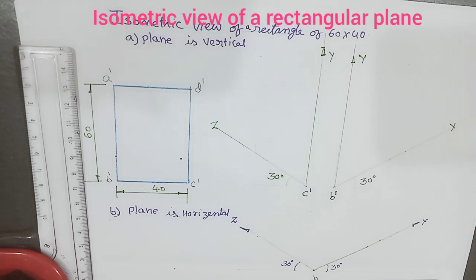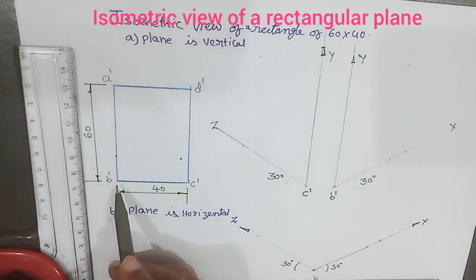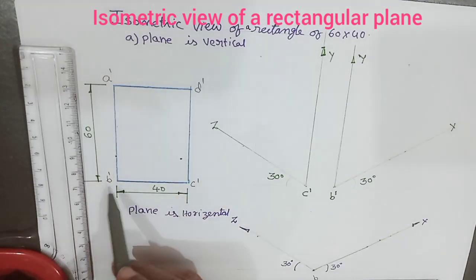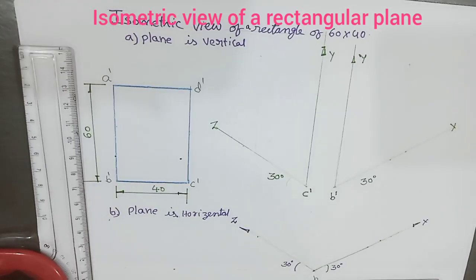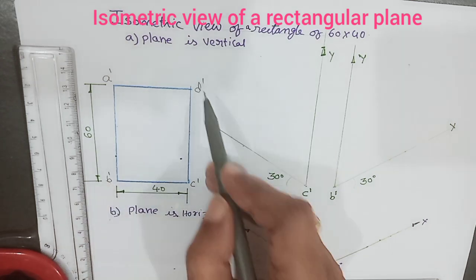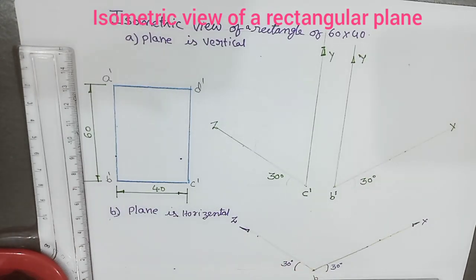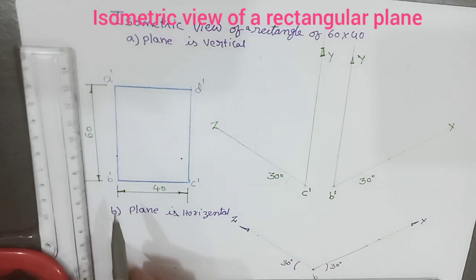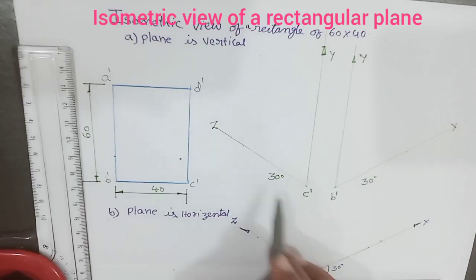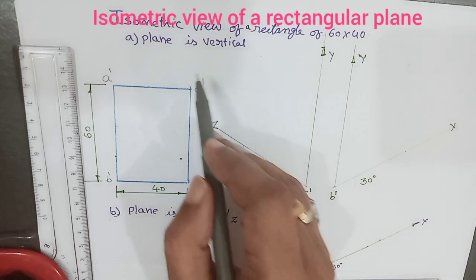Now we will see how to draw a rectangle in isometric view. The given problem is the rectangle has measurements of 60 by 40 and we have to draw the isometric view of a rectangle when the plane is vertical as well as when the plane is horizontal. This is the orthographic projection of the rectangle, A dash B dash C dash D dash. Here B dash C dash side and A dash D dash side are parallel to the horizontal plane. The lines parallel to the horizontal plane are to be tilted at 30 degrees to the ground line, and the lines parallel to the vertical plane are to be drawn at 90 degrees to the ground line.